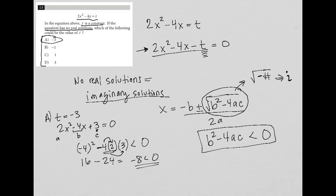But let's just try B just in case, just to make sure. So I'll go up here, because I have some space. So with B, B is saying that t is equal to negative 1. So if we try that, we'd say that means that 2x squared minus 4x plus 1 equals 0.